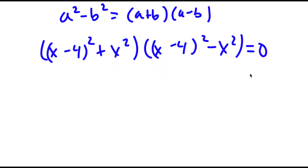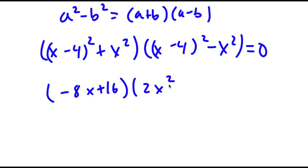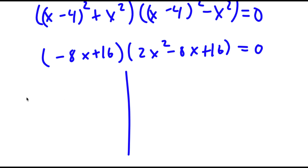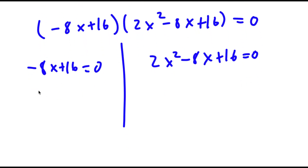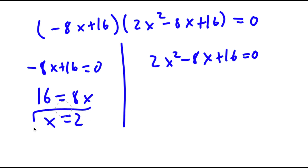Now if I expand this, I get negative 8x plus 16 times 2x squared minus 8x plus 16 is equal to 0. So this gives me two equations. I have negative 8x plus 16 is equal to 0, and I have 2x squared minus 8x plus 16 is equal to 0. For negative 8x plus 16 equals 0, I get 16 is equal to 8x, meaning x equals 2. So this is one solution.